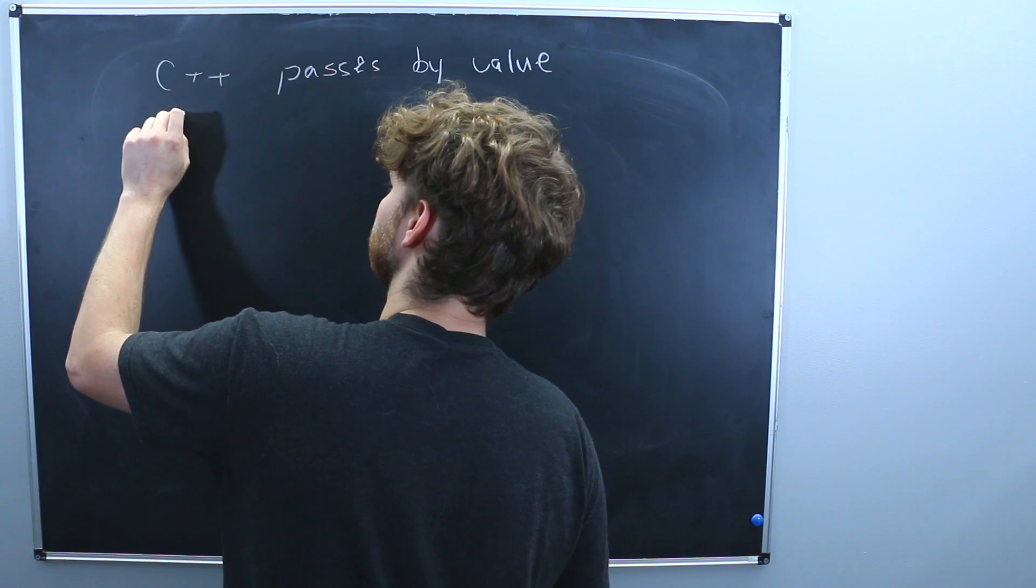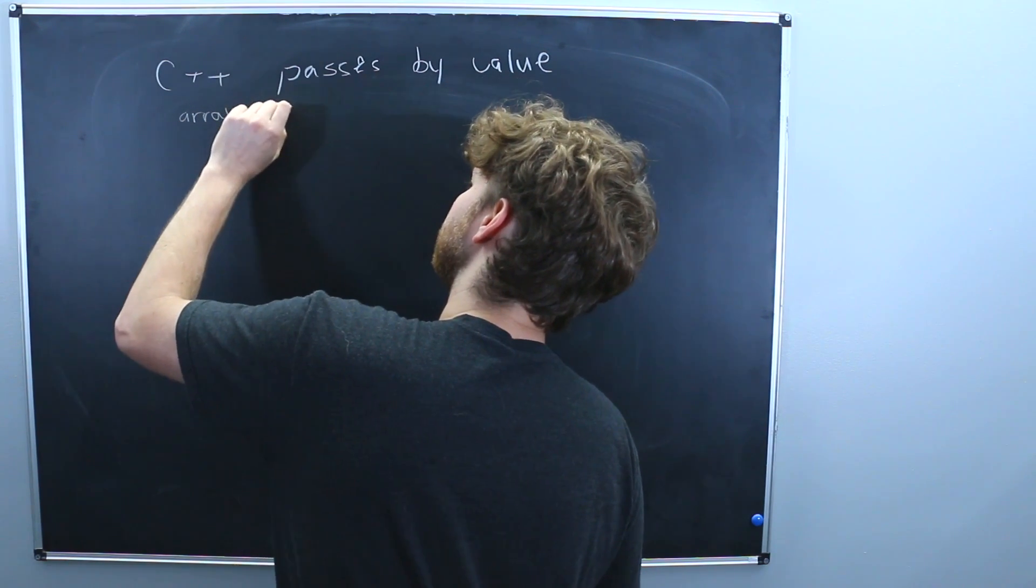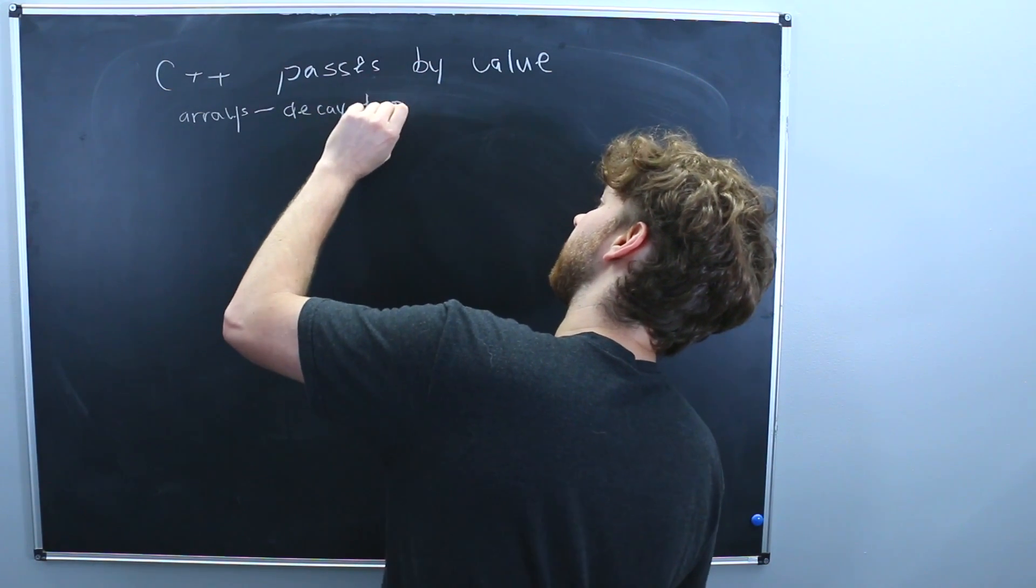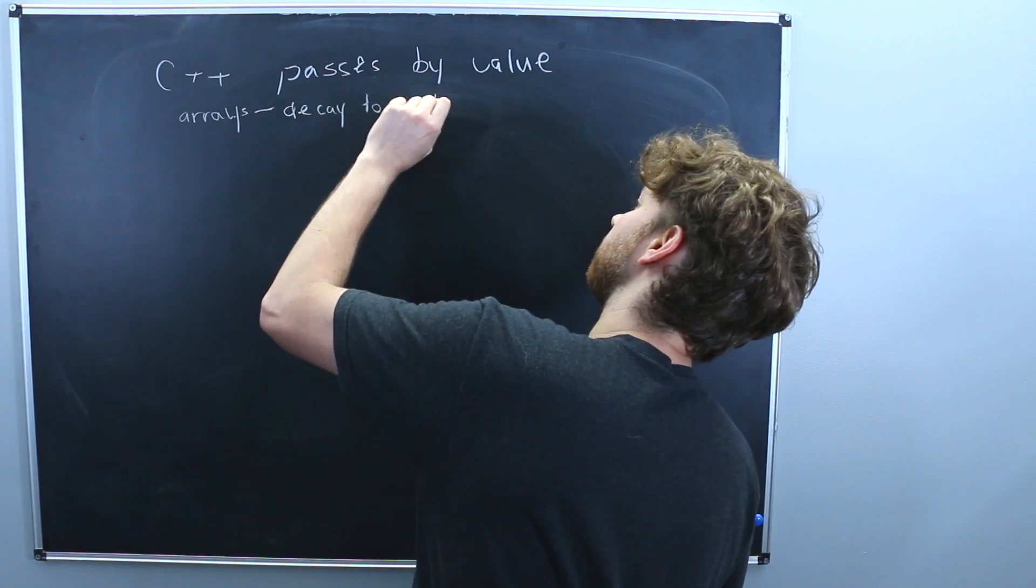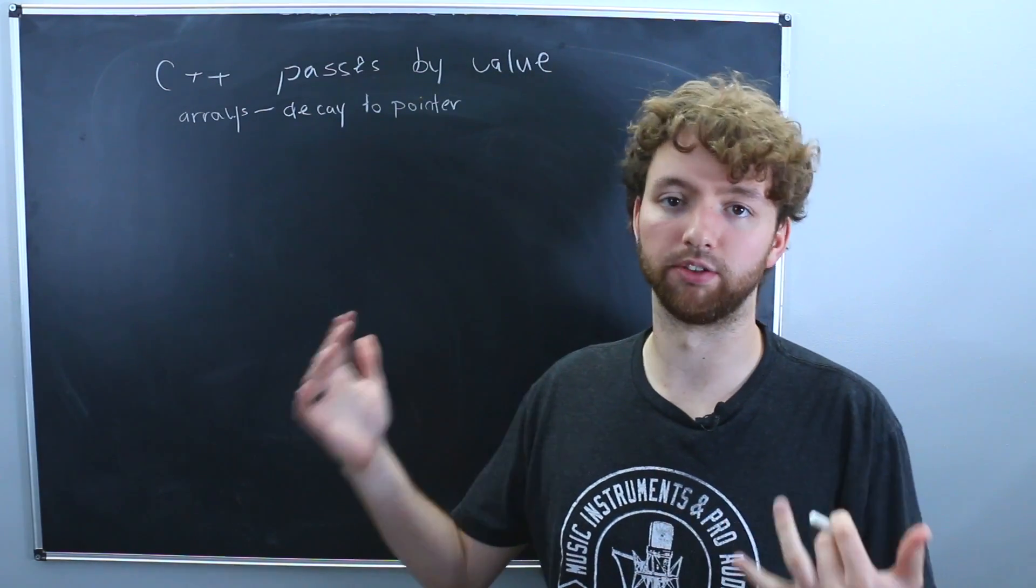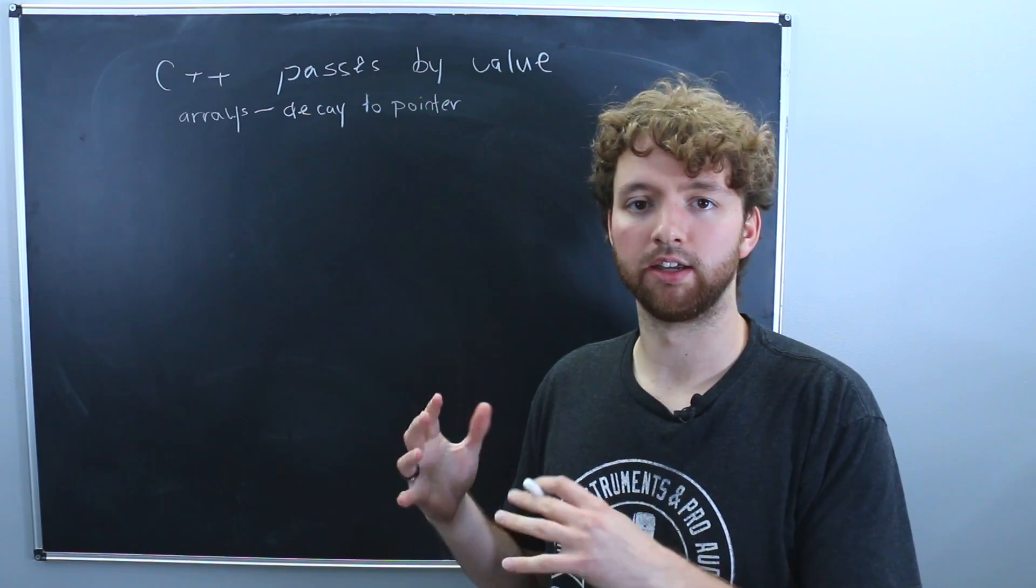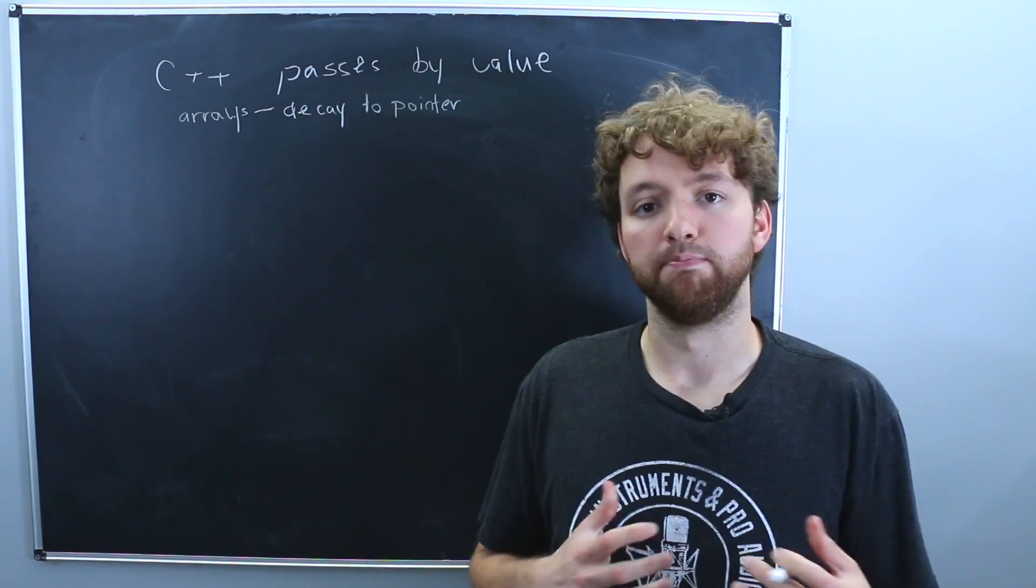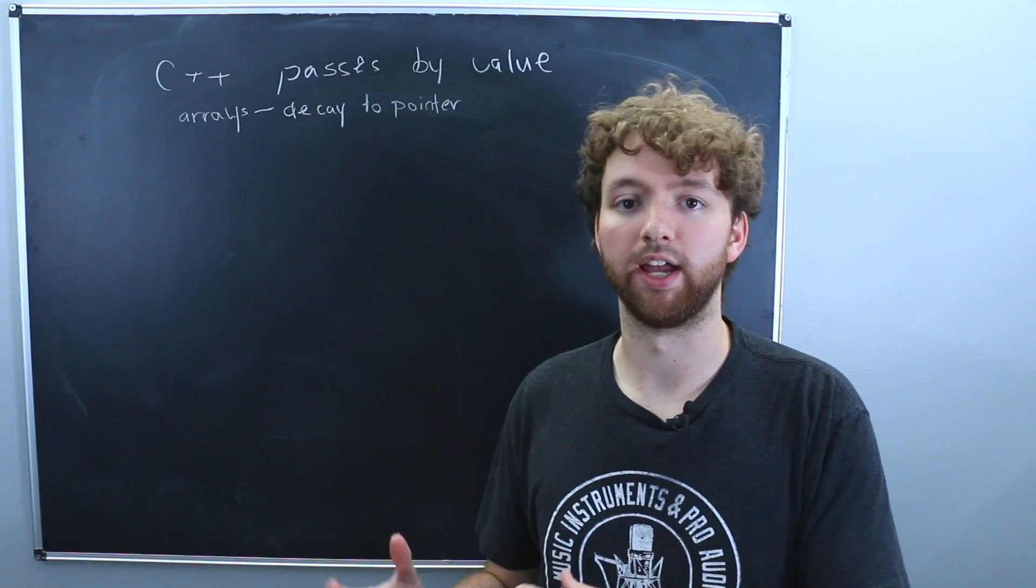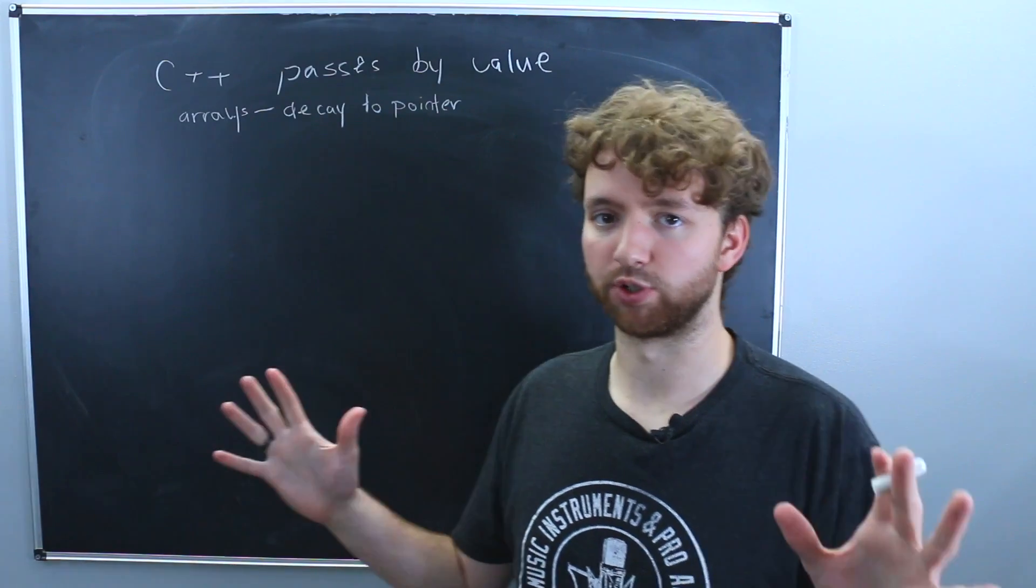But there is one exception, which we're not going to get into a ton of detail. But basically, C++ arrays are said to decay to pointers. And that just means they lose a little bit of extra information around them. So you can't easily check the length of the array. And arrays can be modified inside of functions by default. Meaning if you pass an array to a function, that function can modify the array, and those changes will be seen after the function call.